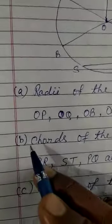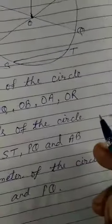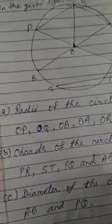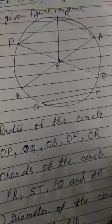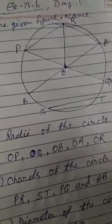Now you see question number B, chords of the circle. So children, chord - what is a chord? A line segment whose endpoints lie on a circle is called a chord.